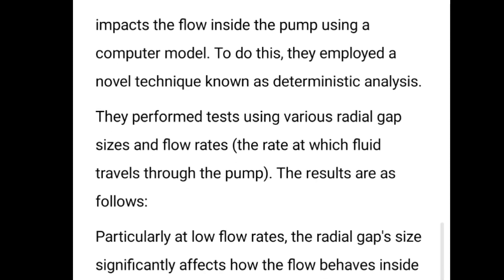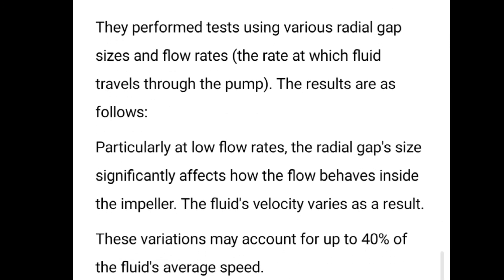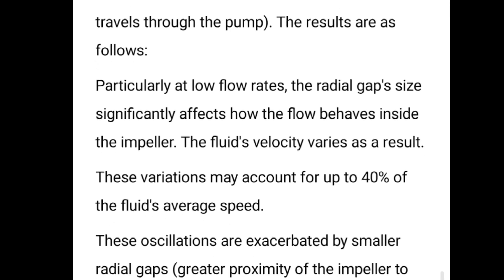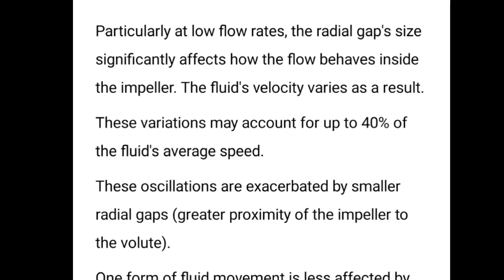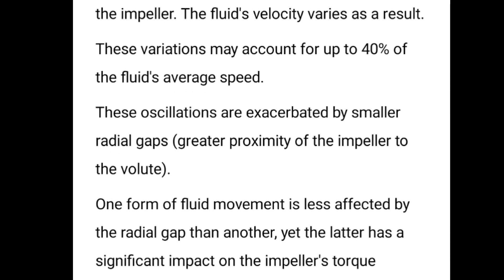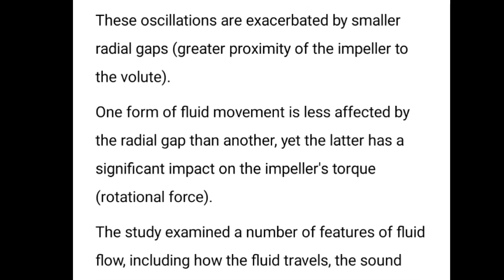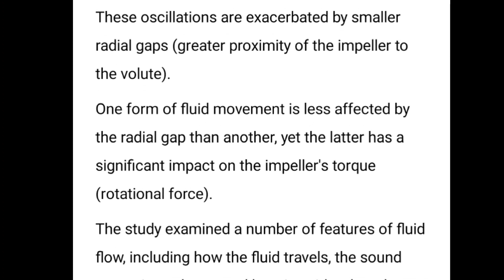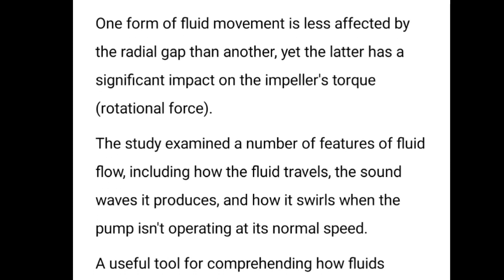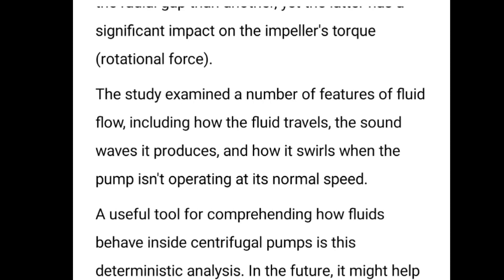After doing research, they also used a computer model to know how it affects flow, and they found out that at low flow rate the radial gap produces significant fluctuation of velocity. The velocity may fluctuate up to 40%, and this effect is more applicable in one direction — when the fluid is moving from the center outward through the blades, but not when the fluid is rotating outside the blades.